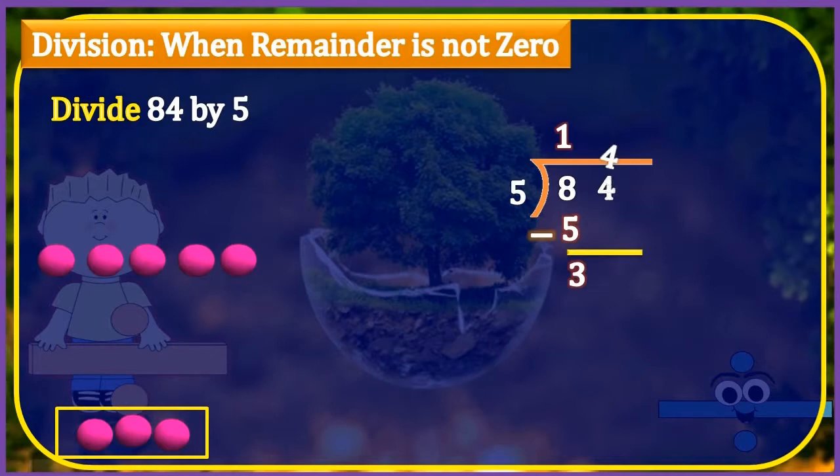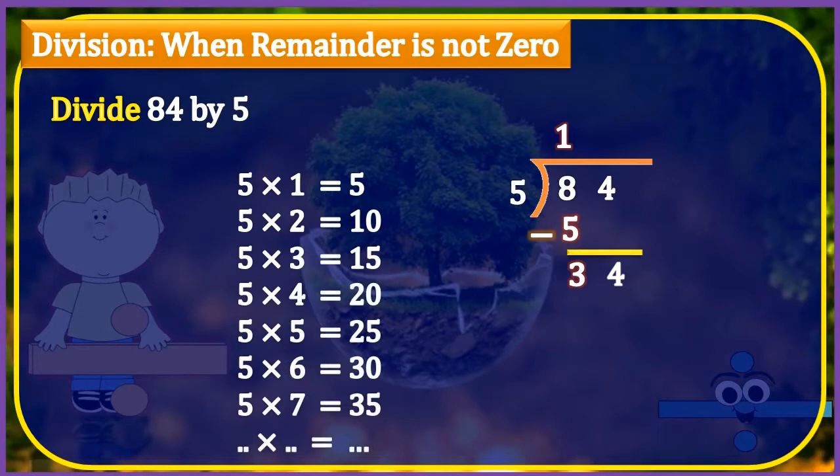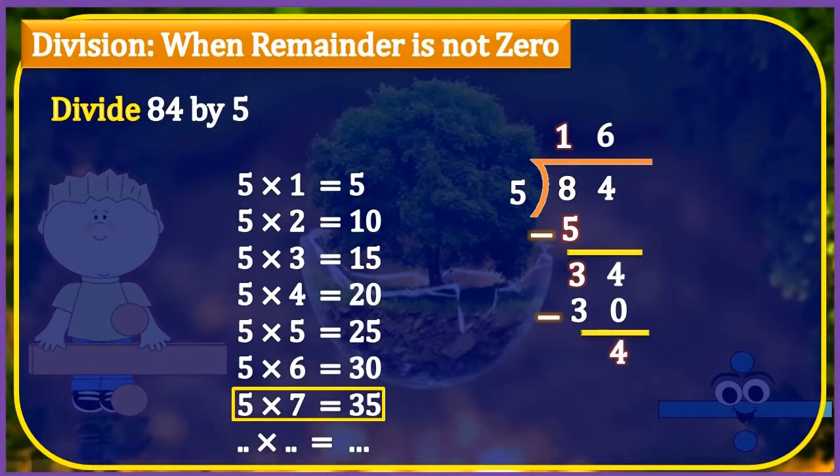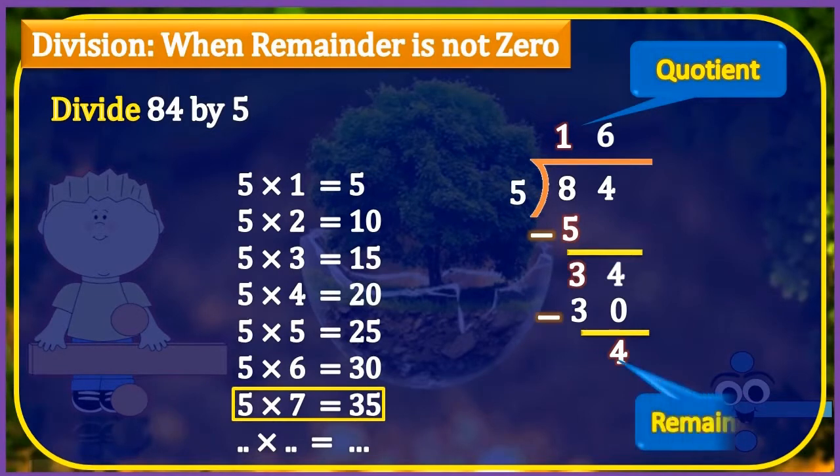So we will take the number at the ones place, that is 4. Write the number 4 after the number 3. So now we have number 34. Now, we will divide the number 34 by the number 5. So, count the table of 5. We can see that at sixth place we have 30, and at seventh time we have 35, and this number is greater than 34. So we write the number 30 below the number 34 and the quotient 6 here. On subtracting, we have 4 as a remainder, and this number cannot be divided by 5. Thus, finally, we have quotient equal to 16 and remainder equal to 4.